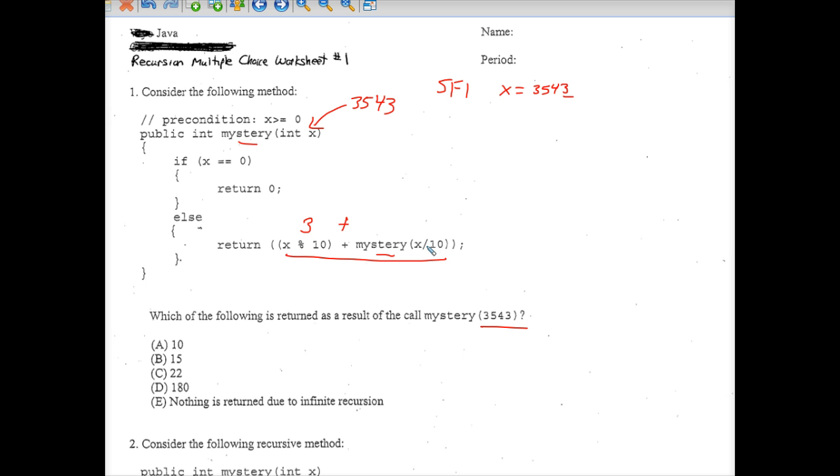But first, we have to take x divided by 10. Because of integer division, when you divide an int by 10, you're taking this part of the number and you're chopping off, after you divide by 10, you're chopping off the decimal. So all of this simplifies to 354.